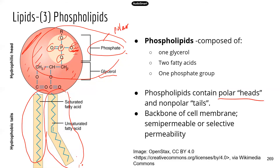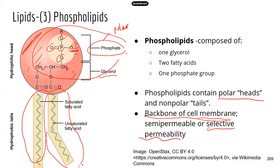Phospholipids are the backbone of the cell membrane. Because of the phospholipids, the cell membrane is selective in terms of what can pass through. The cell membrane is like the door of your house — it controls what can come in and what can go out. It has selective permeability: it's only permeable to certain molecules, but not others.